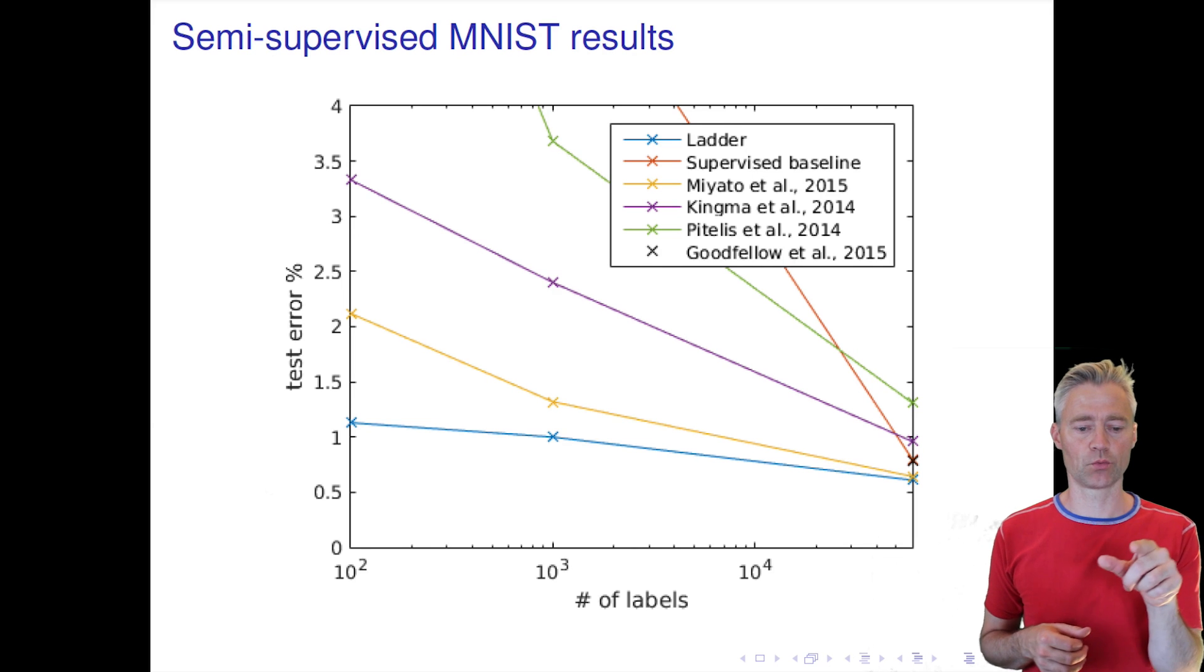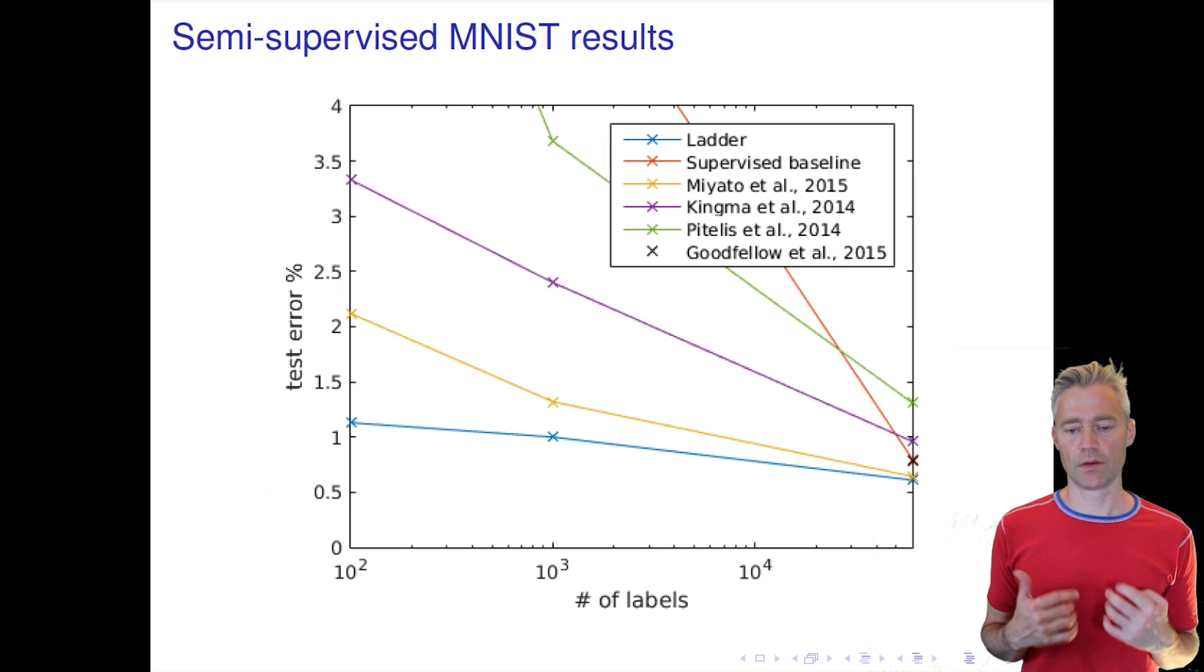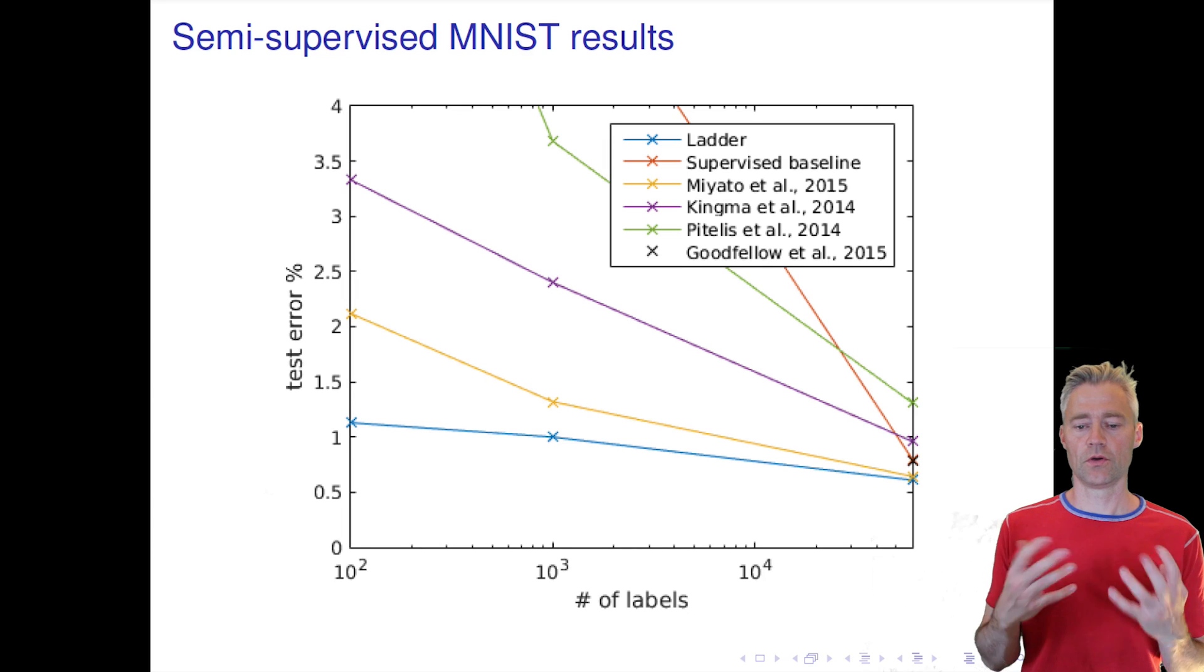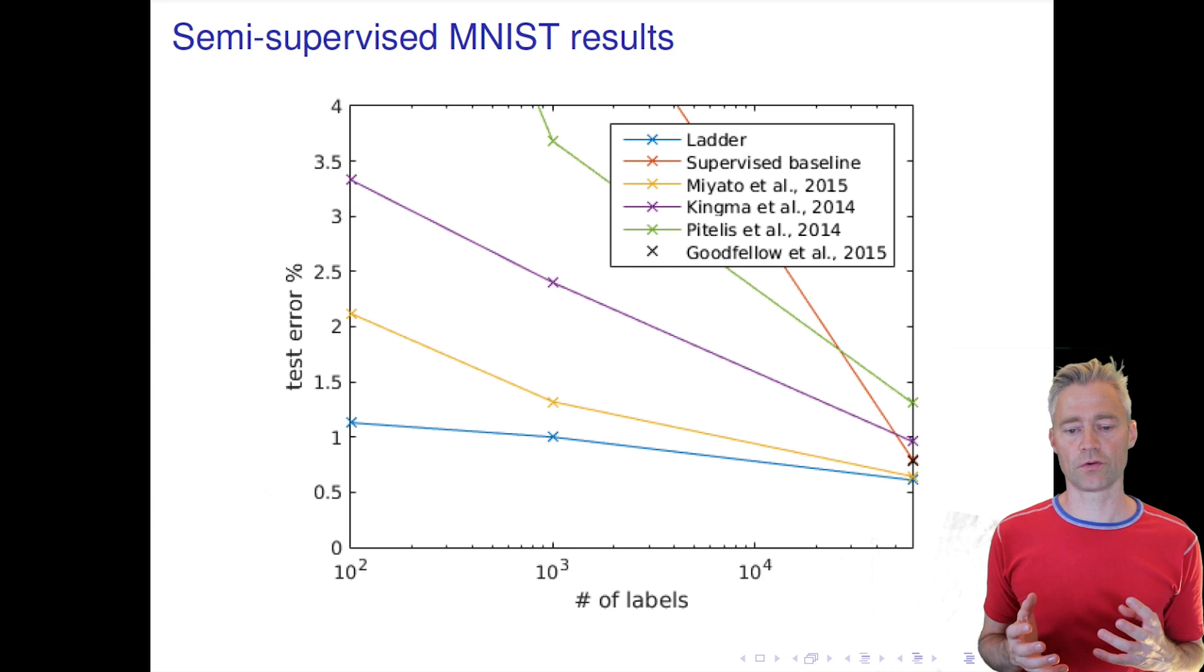You can see for example the ladder network gets a little bit more than one percent error and this is pretty amazing because before the revival of deep learning this number would have been considered really good for a neural network where we have used all the labeled data, all the 60,000 labeled data.